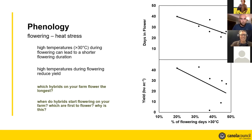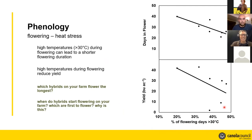Flowering heat stress was widespread across the prairies this year — temperatures above 30 degrees during flowering can lead to yield loss. I looked at the percent of flowering days above 30 degrees. Imagine your canola flowered for 20 days and 10 of those days were above 30 degrees — that means 50% of the flowering days were pretty hot. What I noticed in this dataset was when that percent was greater, days in flower were shorter. So high temperatures during flowering can lead to a shorter flowering duration, and both the shorter duration and the heat stress lead to reduced yield.